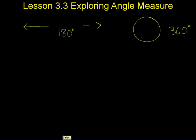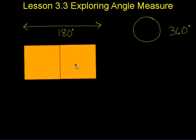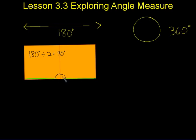I'm going to bring out some polygons — the first ones are some squares. If I put those two squares together and think of this as a straight line, the measure of these two angles has to equal 180 degrees. So I can think: 180 degrees divided by 2 — and they're both the same because it's two squares — which equals 90 degrees. Knowing that a straight line is 180 degrees helps us figure out that the measure of that angle is 90 degrees.